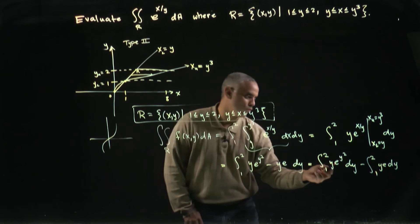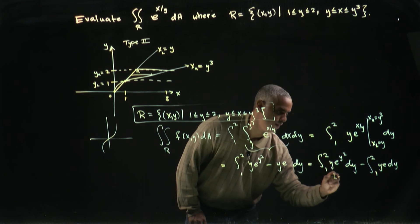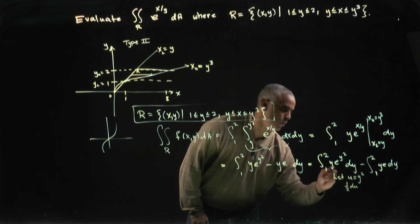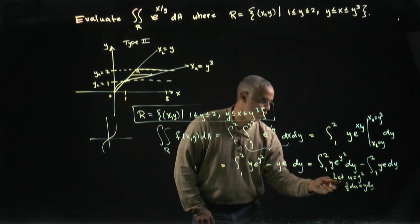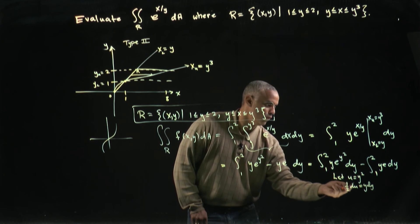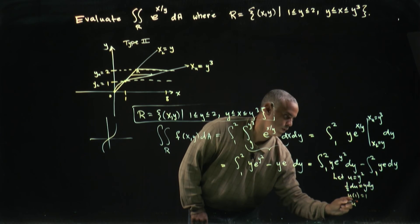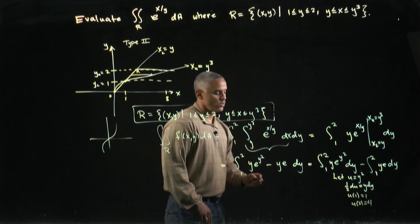But for this first integral, I want to do a u substitution. So here, I want to transform this integral by letting u equal to y squared. It's clear that a half du will pick up the y dy, and at the upper and lower bounds, u of one is going to give me one squared or one, and u at the upper limit, u of two, is going to give me two squared or four.